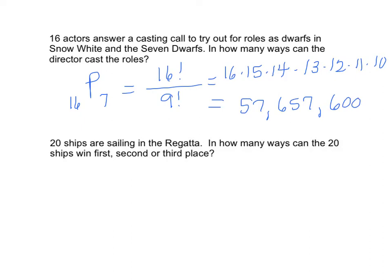Twenty ships are sailing in the regatta. How many ways can the twenty ships win first, second, or third place? Order matters. First, second, third. So I have the permutation of twenty objects taken three at a time, is twenty factorial over twenty minus three factorial, which is twenty times nineteen times eighteen, which is 6840.